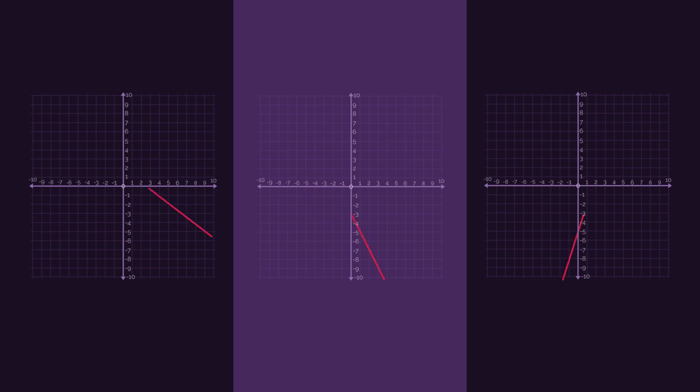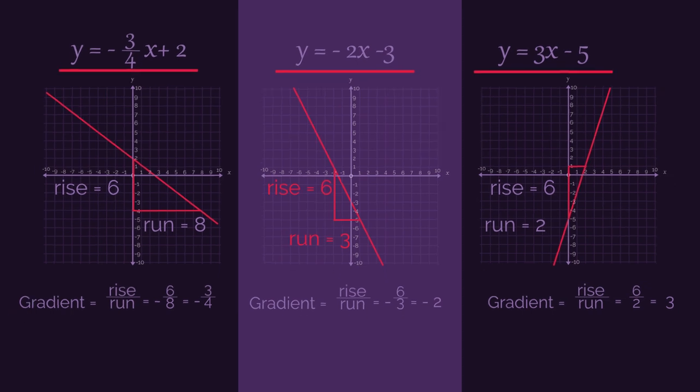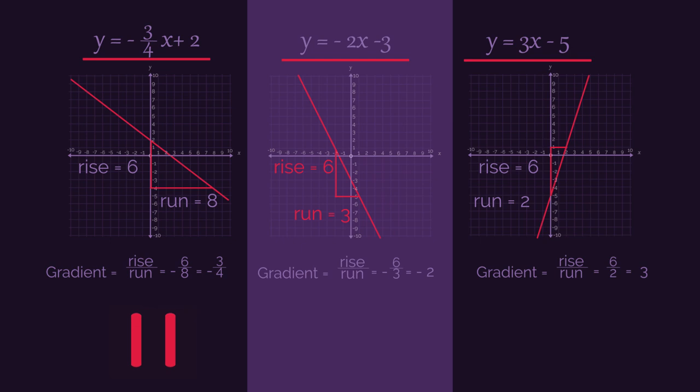So let's have a look at these three lines and their equations. If I gave you the gradient of all three, what two things can you see that links the straight line with its equation? Pause the video, have a think, and click play when you're ready to check.